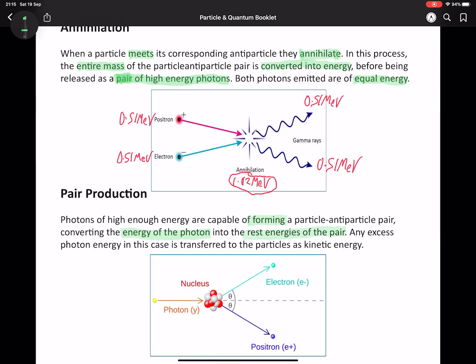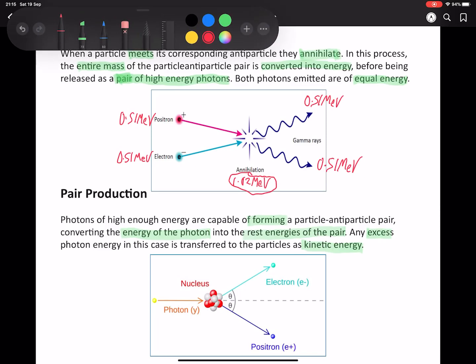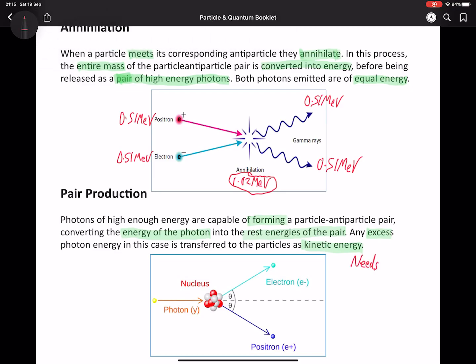In this case, the only real requirement is that the photon has at least enough energy to cover the rest energies of that pair. Kinetic energy is just shared equally. So where previously it was added at the start, now we have kinetic energy at the end. If the photon has more energy than is needed, the excess energy is shared equally to each particle-antiparticle.